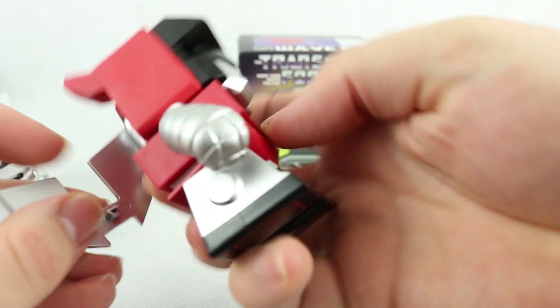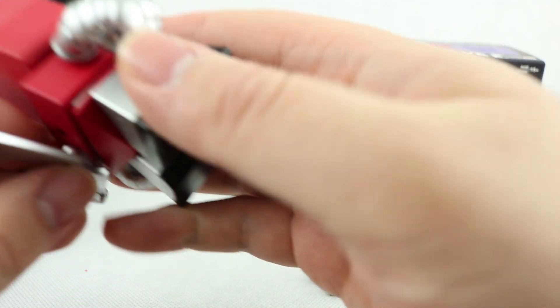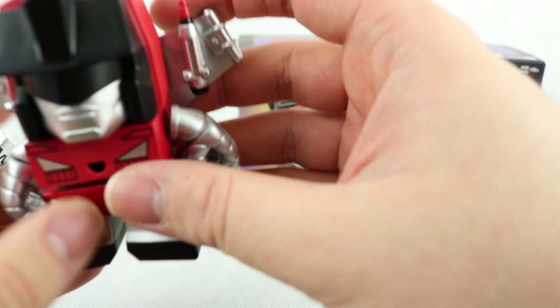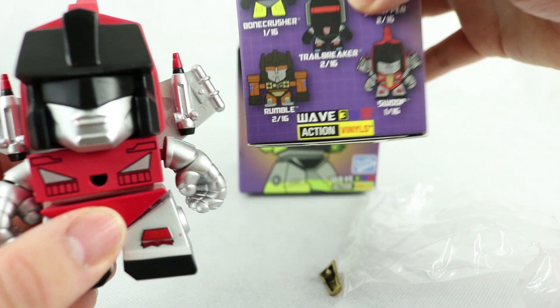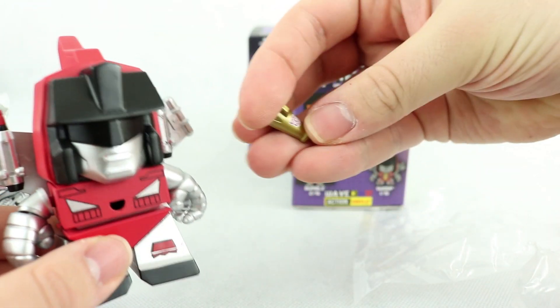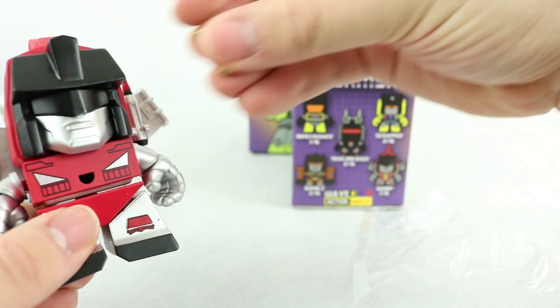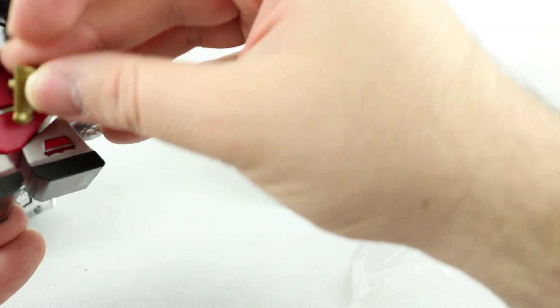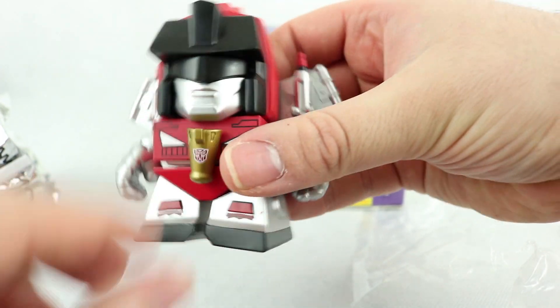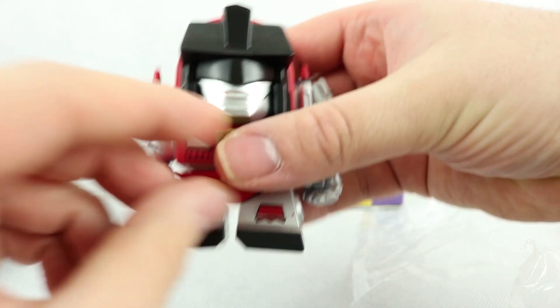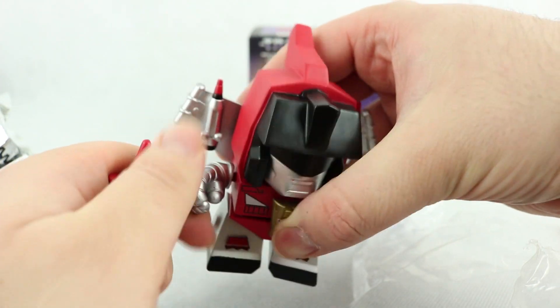So you can see there's a peg here that kind of just attaches on the back. Is this the right way? Yeah, that's a reference, yep. That's quite cool. You actually put the dinosaur mode part on his torso like that. That is actually the tab and just put it on. And he's got a sword.